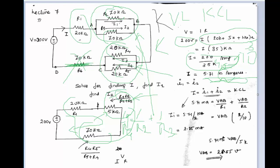To find specifically the currents i1 and i2, apply KCL at the node. Applying KCL gives i = i1 + i2, where i is 5.71 milli ampere. The individual currents can be written as V/R: i1 equals V_ab divided by R1, and i2 equals V_ab divided by R2, where V_ab is the voltage between nodes a and b.